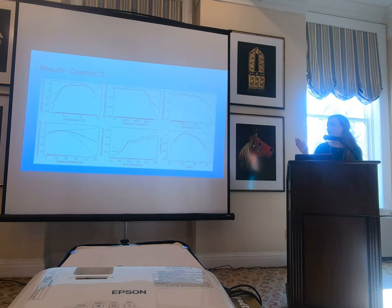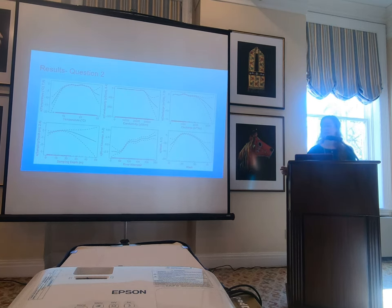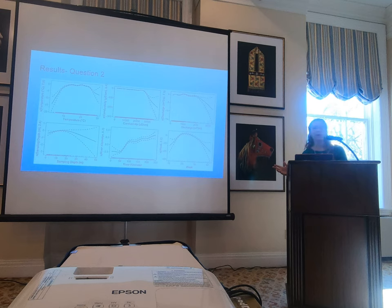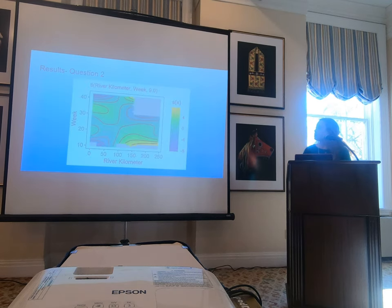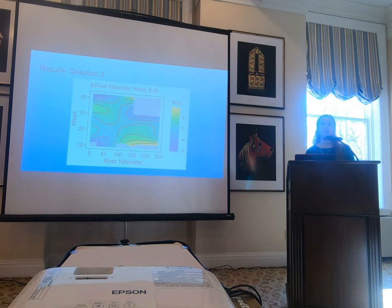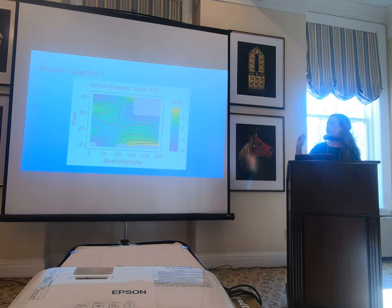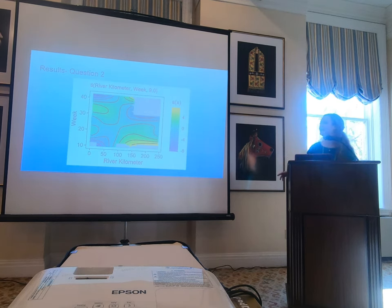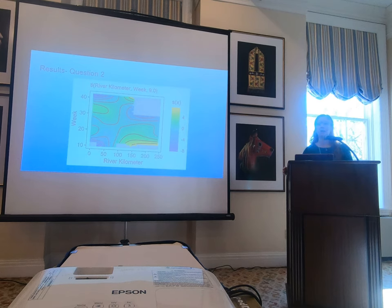For river kilometer, white perch spawn in the more northern regions since the southern portion near the Battery has saltier water. Spawning peaked around May, which aligns with the literature, as white perch generally spawn in the heads of rivers between April and June. The mixed effect of week and river kilometer showed that earlier weeks of the year and more northern river kilometers are spawning hot spots for white perch, while southern, later-season areas show lower egg abundance.